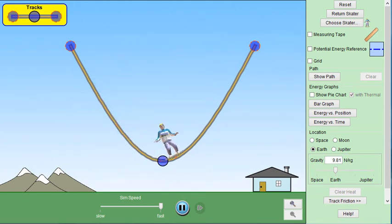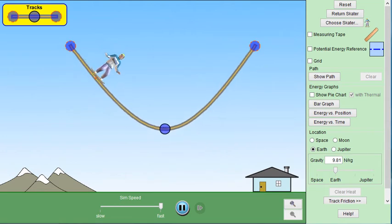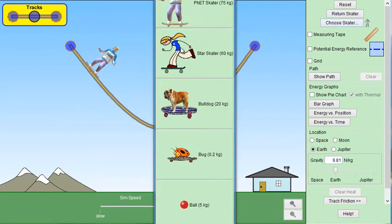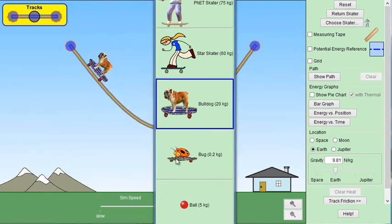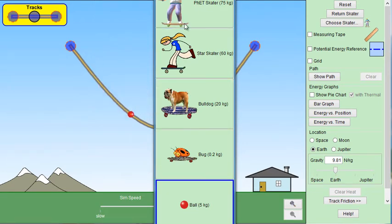So here's what you'll see when you first open it up. You have a skater going back and forth. Keep in mind that you can change the track, and you can also change the skater. You can pick Super Star Girl, Bulldog, Bug or Ball. Let's go back to Ken.